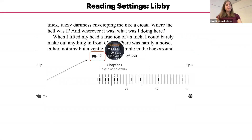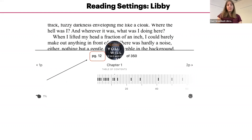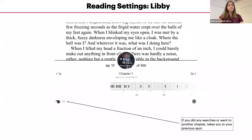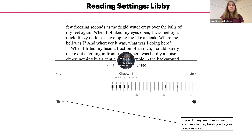The center of the book cover page will contain your progress in the book. It defaults to page number. If you tap on the page number, it will change to show the percentage of the book you've completed. The page number on the far left will take you to the beginning of the current chapter, and the page number on the far right will take you to the beginning of the next chapter. Tapping the finger icon on the bottom left will take you back to your previous spot if you went to another chapter or did a search.